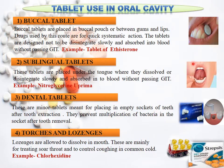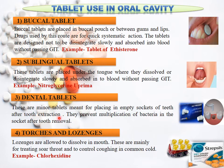Next are lozenges and troches. A very famous example of lozenges is Strepsils. Strepsils are mainly prepared for dry cough. Lozenges also treat sore throat. They dissolve in the mouth and are swallowed from there. Another example is chlorhexidine.